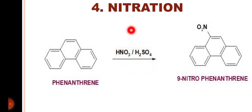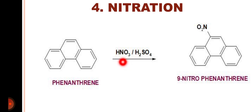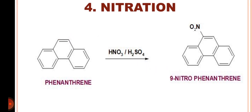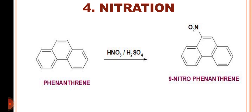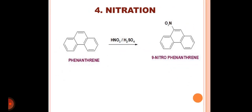Dear students, this mixture of nitric acid and sulfuric acid is called the nitrating mixture. The nitronium ion generated by this reaction gets attached at the 9th position of the phenanthrene, and we get the formation of 9-nitrophenanthrene.